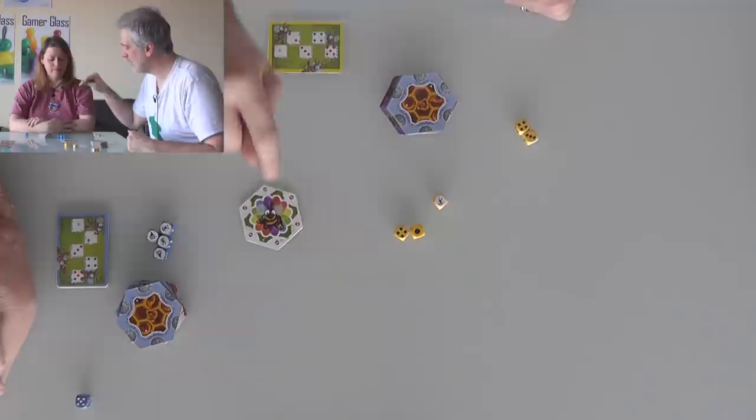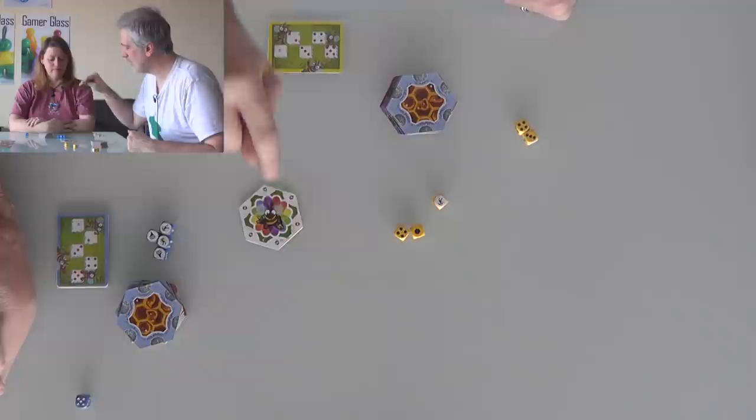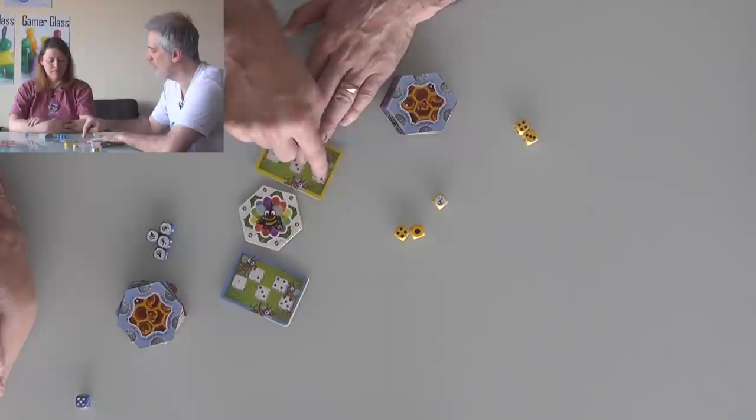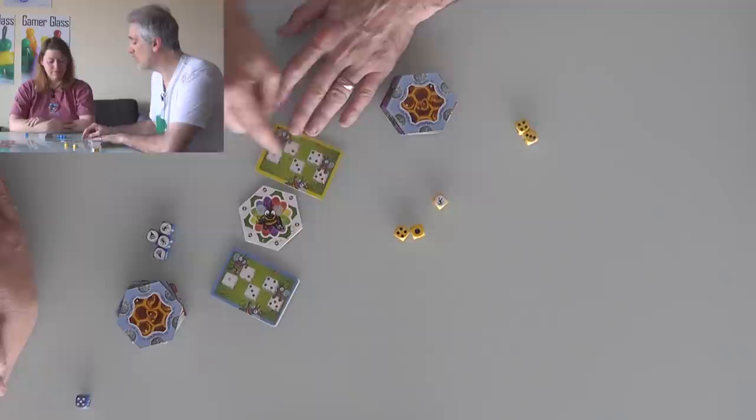Occasionally, one of these wild card flowers will come up, where you'll notice there's no place to put dice on it. Instead, what you have to do with one of these is, as soon as one comes out, whoever pulled it out shouts, Beeline! And everybody knows they can make a Beeline for this. Which means we take our Beeline card, if we want to compete, put it over here next to it, and that means we have to race to place a 1, 2, 3, 4, 5 in sequential order.